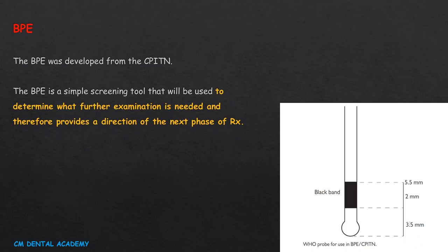All teeth in each sextant are explored and the highest score per sextant is recorded in a simple six-box chart. The probe is walked around the sulcus with a light probing force of 20–25 grams — a commonly examined fact. The highest score is recorded in each sextant. For a sextant to qualify for recording, it must contain at least two teeth.